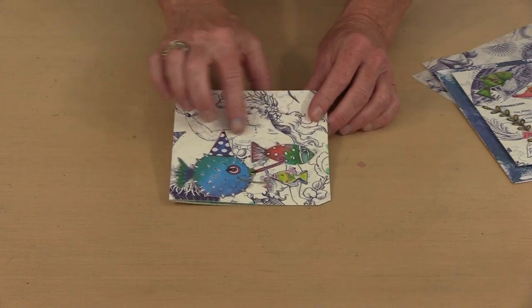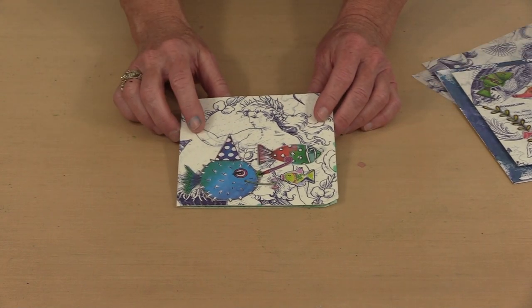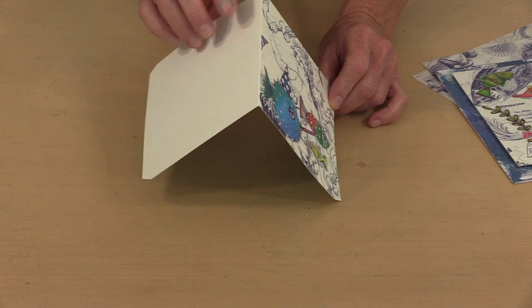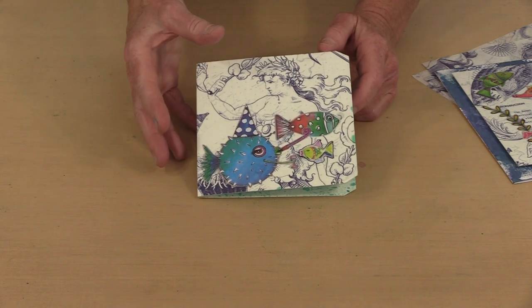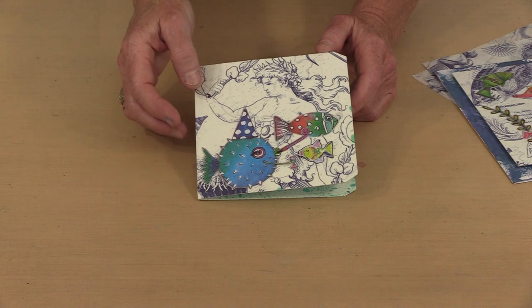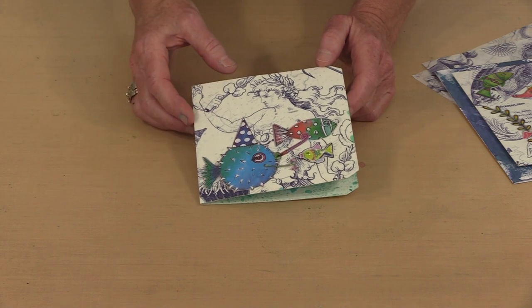The first one, this is one of our number 12 tags. I adhered one of the rice papers to the front. This will be my cover front and back, and then I can bind some paper or some smaller tags in here.